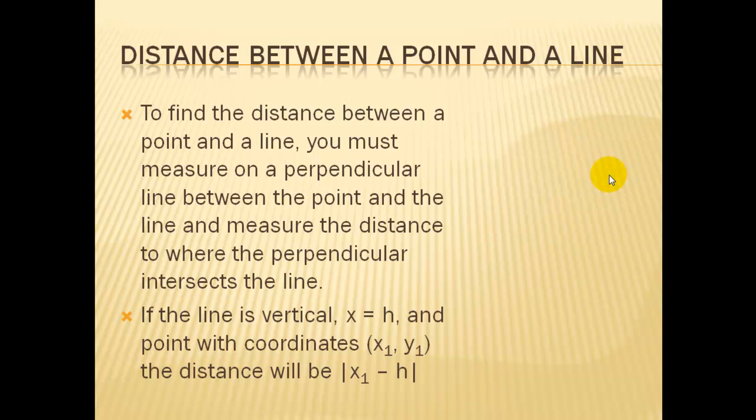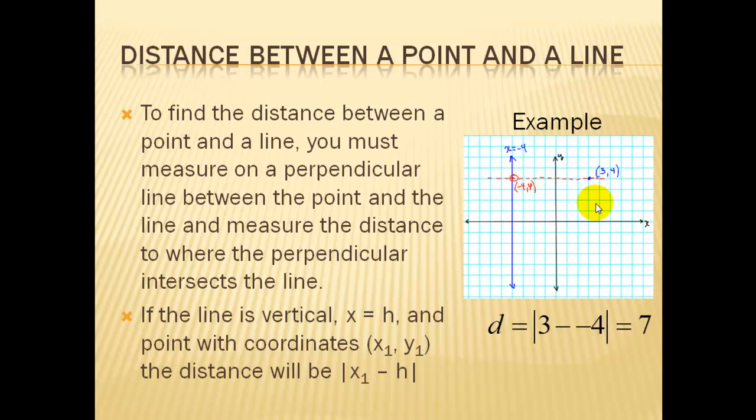Likewise for a vertical line, you can see that this intersection point and our target point are on the same horizontal line. So to find the distance, we're going to be taking the difference of the two x values and then taking the absolute value to get our distance of 7.